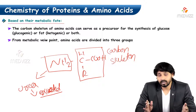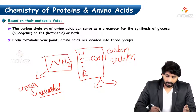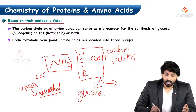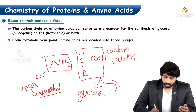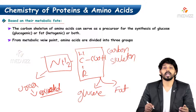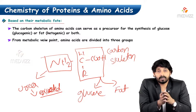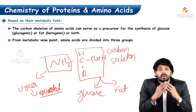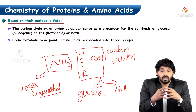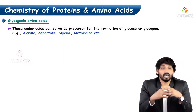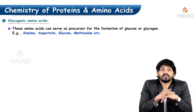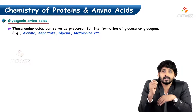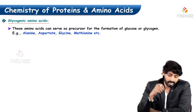What is the fate of this carbon skeleton? The carbon skeleton may be involved in synthesis of glucose for energy or storage as fat. If a particular carbon skeleton is involved in energy production, that is known as a glycogenic or glucogenic amino acid — those serving as precursors for glucose formation. Examples are alanine, aspartate, glycine, and methionine.